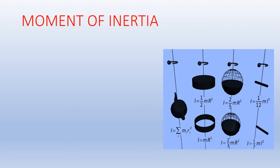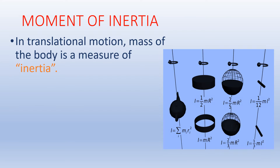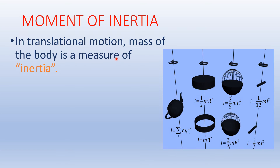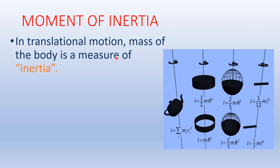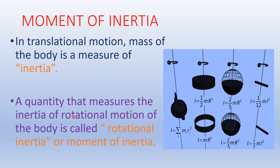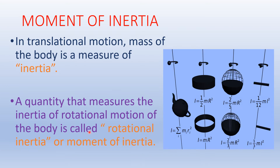Moment of inertia. What is moment of inertia? Before that, we should see inertia in translational motion. In translational motion, mass of a body is the measure of inertia. Inertia is that property of matter that causes it to resist its change in velocity — that is, its speed or direction. A quantity that measures the inertia of a rotational motion of a body is called rotational inertia or moment of inertia.